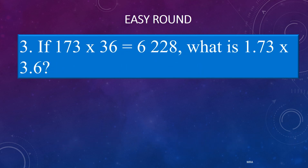3. If 173 times 36 is equal to 6228, what is 1.73 times 3.6?